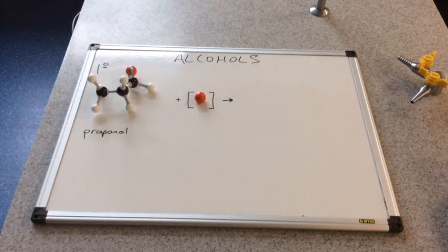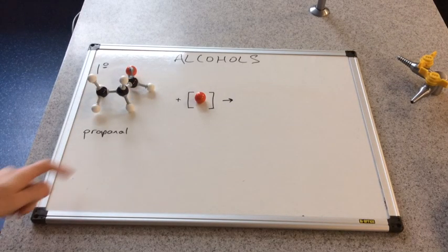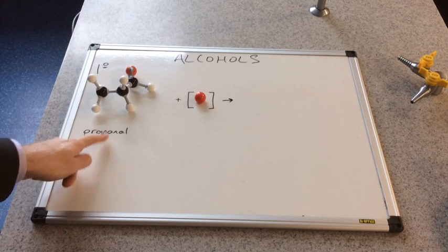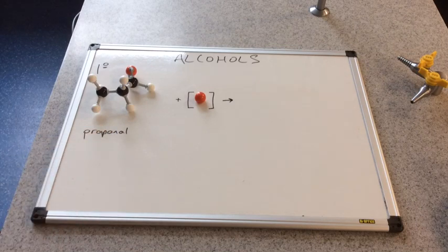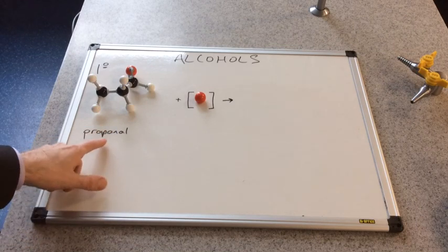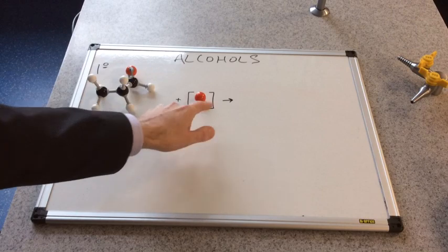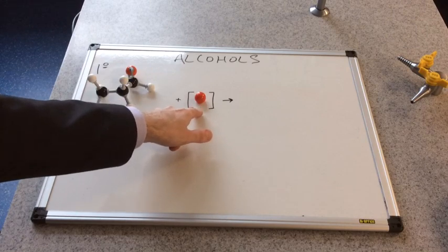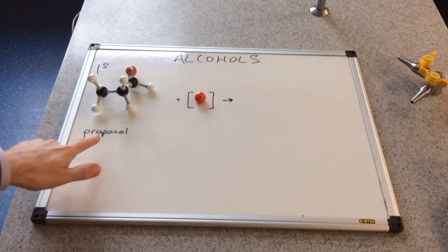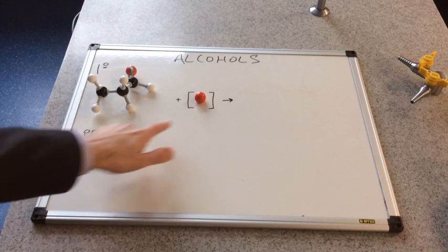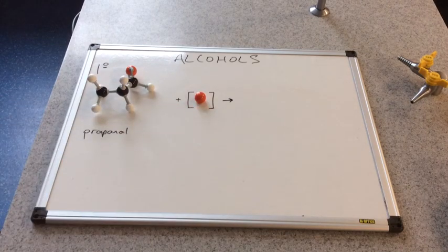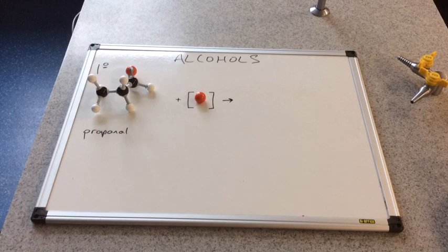We're still on primary alcohols at the moment. We've just made propanal by the first oxidation reaction. The thing you need to know is aldehydes can be oxidised further. So we're going to oxidize propanal with some more acidified potassium dichromate with some heat.